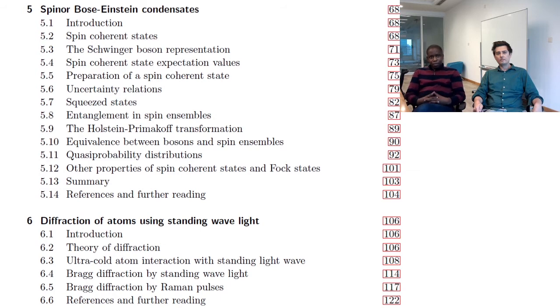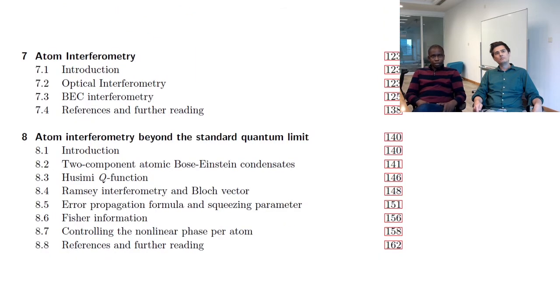We move on to chapter six, where we now talk about the diffraction of atoms using standing wave light. So this is basically manipulating atoms with light. Then we quickly move on to how we use that in doing atom interferometry. And in atom interferometry, we are going to be looking at if I have a BEC sitting in a trap, how do I really put it in motion and do interferometry with that.